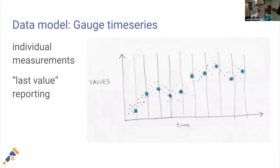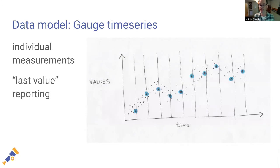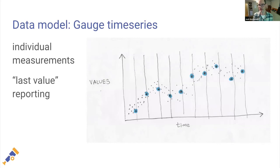We also have the notion of a gauge in traditional metrics interfaces. The data model here is a little different: you may set a gauge many times during an interval, but what we commonly report is the last value that was set. Although you have many points visualized in a graph, only certain dots are the ones actually reported. This is called last-value reporting — we call it a gauge. We don't actually value or keep information about every point; all we want is a signal we can evaluate at a point in time. This is a relatively inexpensive type of aggregation.